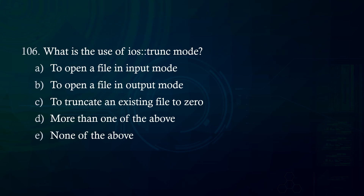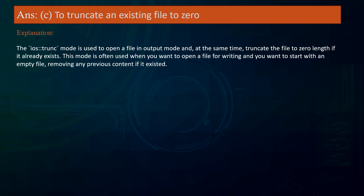What is the use of iOS::trunc mode? A. To open a file in input mode. B. To open a file in output mode. C. To truncate an existing file to zero. D. More than one of the above. E. None of the above. Answer: To truncate an existing file to zero. Explanation: The iOS::trunc mode is used to open a file in output mode and simultaneously truncate the file to zero length if it already exists, useful when you want to start writing to an empty file.